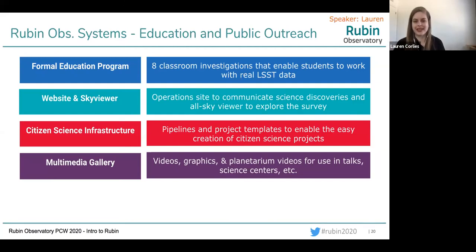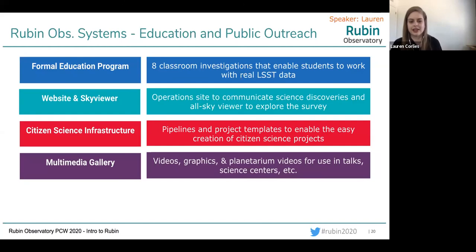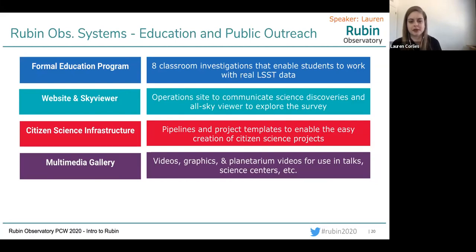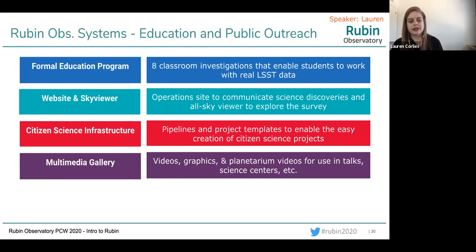Rampelle mentioned we're going to have a new website in operations — EPO is building that as a primary way to reach the general public and communicate science discoveries. We're also building something called the sky viewer — an all-sky viewer so people can explore the images the telescope will be taking. We're also building infrastructure for citizen science projects — we're taking so much data that it's almost impossible for the science community alone to analyze all of it. We also provide a multimedia gallery: videos, other graphics, planetarium videos for anyone who wants to communicate about Rubin Observatory.